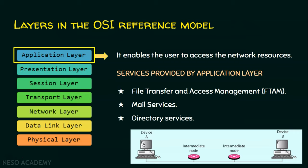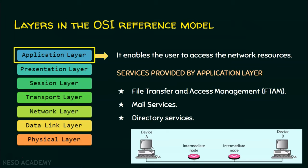A user may intend to send a file from one computer to another, or may need a file from a remote computer. The user working at the local computer can access a file from the remote computer. The second service offered by the application layer is mail service — the user may access email, which again requires the computer network to send or receive emails. The third service is directory services, which means the application provides access to data globally.